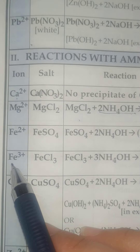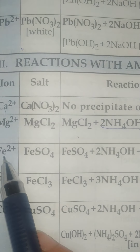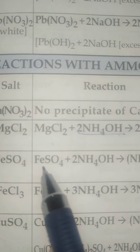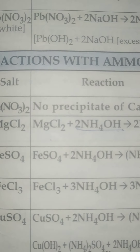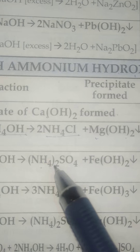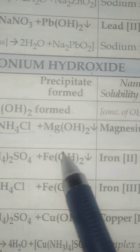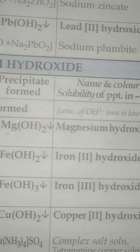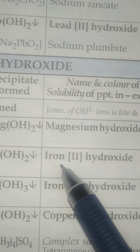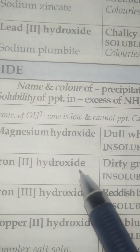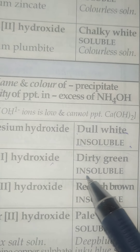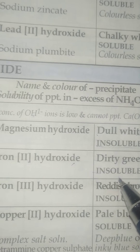For iron (Fe2+), when it reacts with ammonium hydroxide, it forms NH4SO4 and a precipitate of iron hydroxide, Fe(OH)2. The color of this precipitate is again dirty green and it is insoluble.